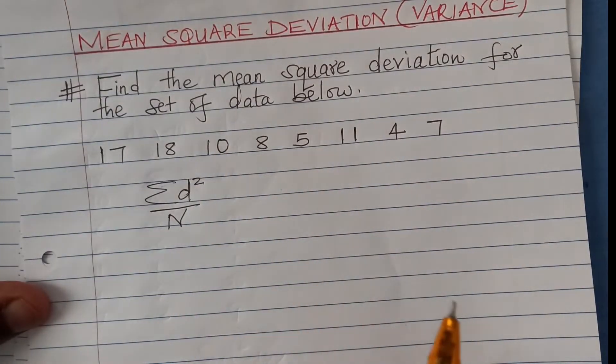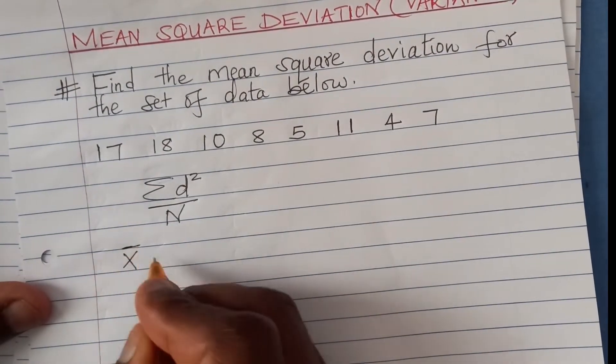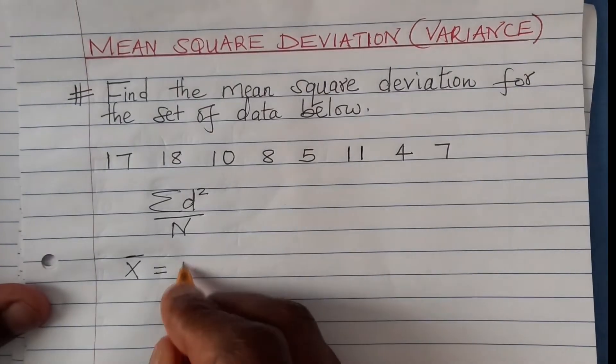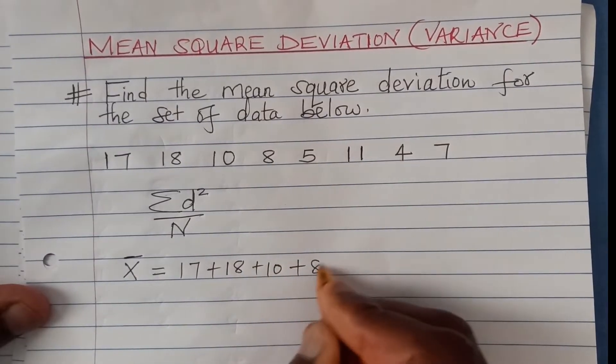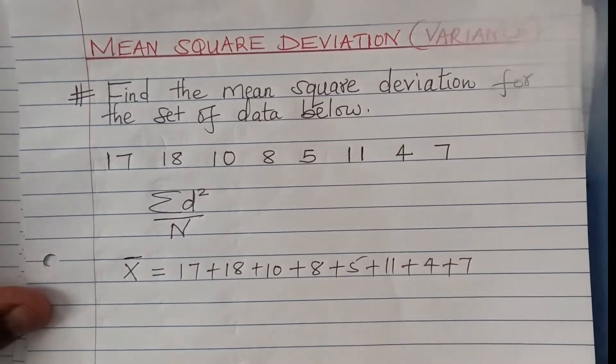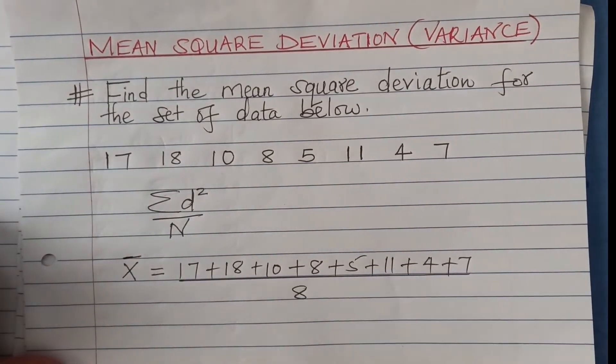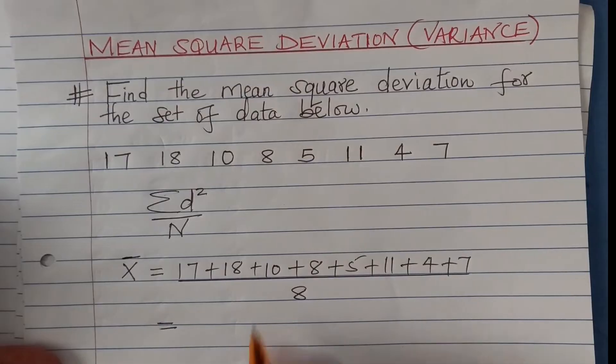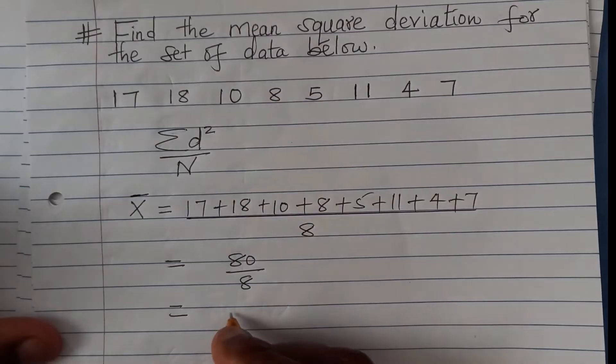Once we get the mean, now we'll get the deviation from the mean. So let me get the mean. You get it by getting the sum of everything here. So we're going to add 17 plus 18 plus 10 plus 8 plus 5 plus 11 plus 4 plus 7. Then everything divided by the total values, total frequency, there are 8. And when you work out these, using a calculator, you get 80 divided by 8. And therefore, the mean will be 10.